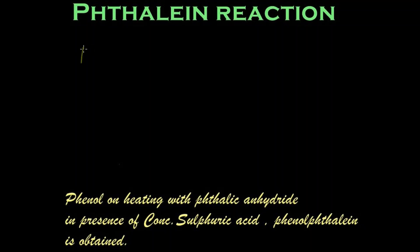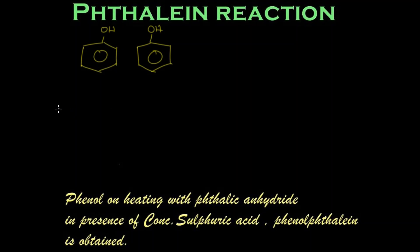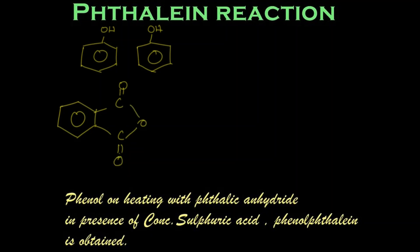Let's write the two molecules of phenol. If you write the reaction in the way how I am writing it, it will be easy for you to understand. Two molecules of phenol and phthalic anhydride — C double bond O, C double bond O, with oxygen — this is phthalic anhydride, and these are phenols. In the para position there will be hydrogen in the phenol.